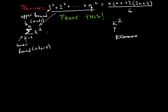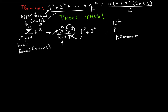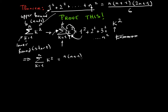So the sigma from K equals 1 to n of K squared is equivalent to writing 1 squared, and then that huge sigma symbol means after you input your value you keep adding — so add 2 squared, then add 3 squared, and you keep going all the way to n because that's where it ends. So we can rewrite the theorem as: the sigma from K equals 1 to n of K squared equals n times n plus 1 times 2n plus 1 over 6.